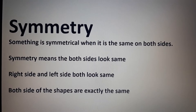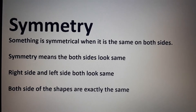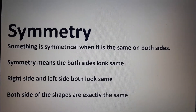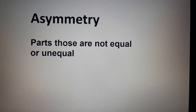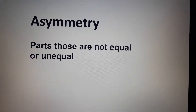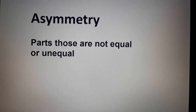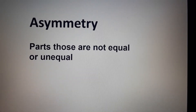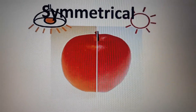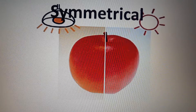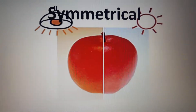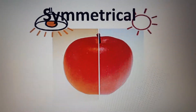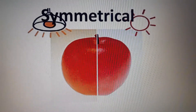Both sides of shapes are exactly the same. What does asymmetry mean? Parts that are not equal, or unequal. Let's take a look at some examples. Look at the apple — the apple is symmetrical.